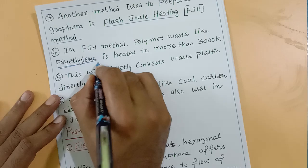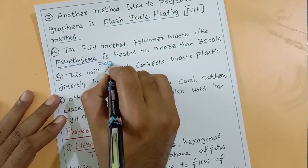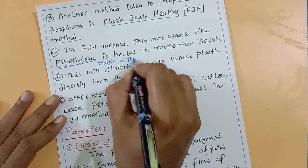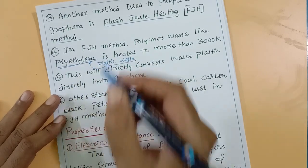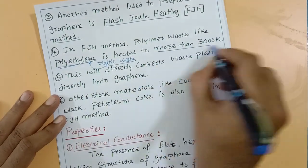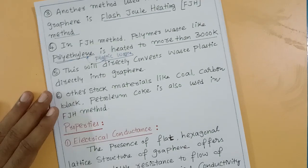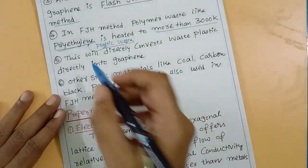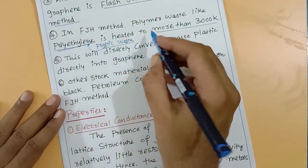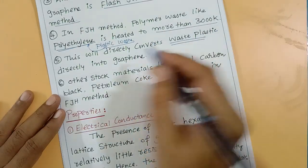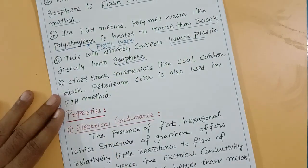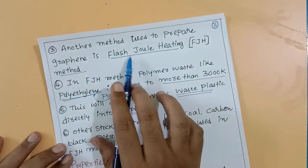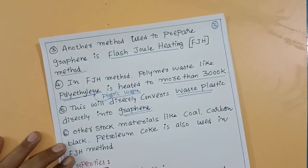This plastic waste is used as a carbon source. For example, polythene requires about 3000 Kelvin of heat. At that high temperature, plastic waste can be converted to graphene. This is the Flash Joule Heating technique.